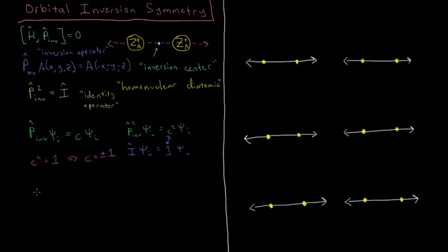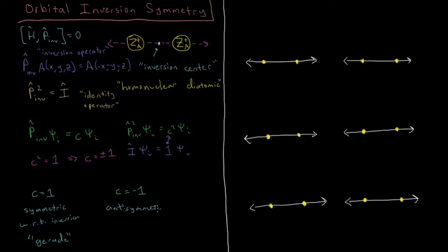This gives us a labeling system you'll hear a lot for molecular orbitals. If c equals 1, the orbital is symmetric with respect to inversion, and we call that orbital g, which stands for 'gerade.' If c equals minus 1, the orbital is antisymmetric with respect to inversion, and antisymmetric is signaled by the shorthand u, which means 'ungerade.' So: g for symmetric, u for antisymmetric.